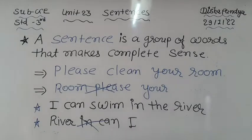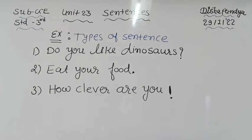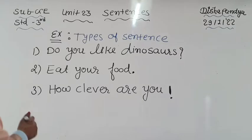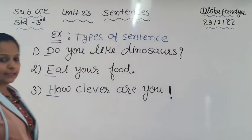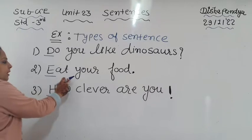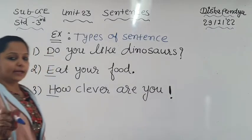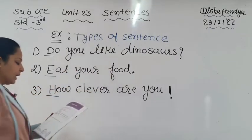Now look at the board. Here are some features of sentences. A sentence begins with a capital letter - H, E, D are all capitals. The first letter of any sentence is always capital. Then it ends with a full stop, or a question mark, or an exclamation mark.